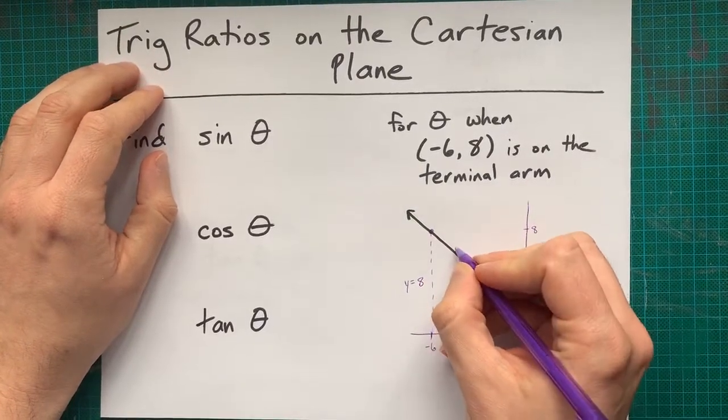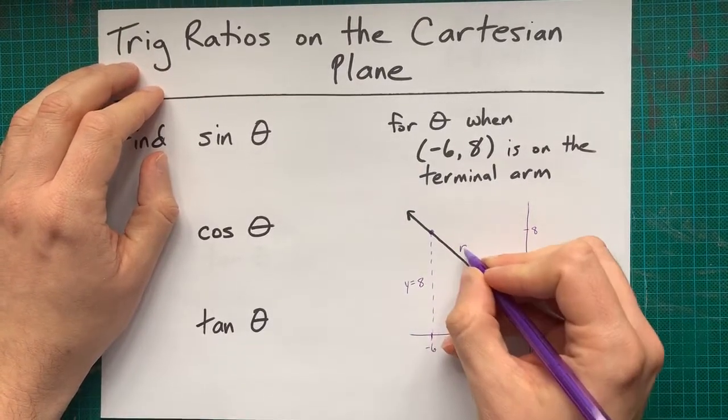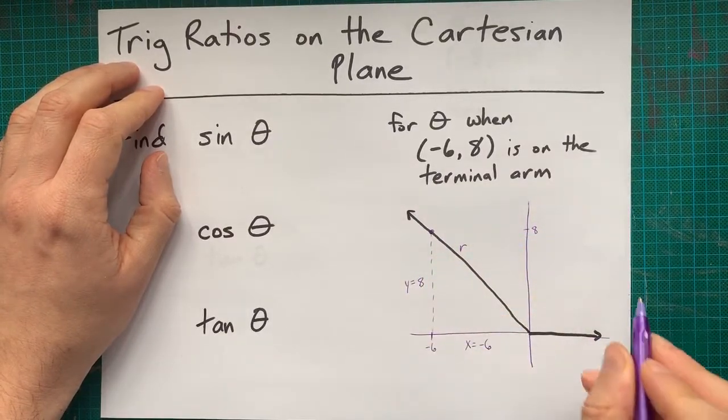and it lets you calculate the value of the hypotenuse, often called r, as though it's the radius of a circle.